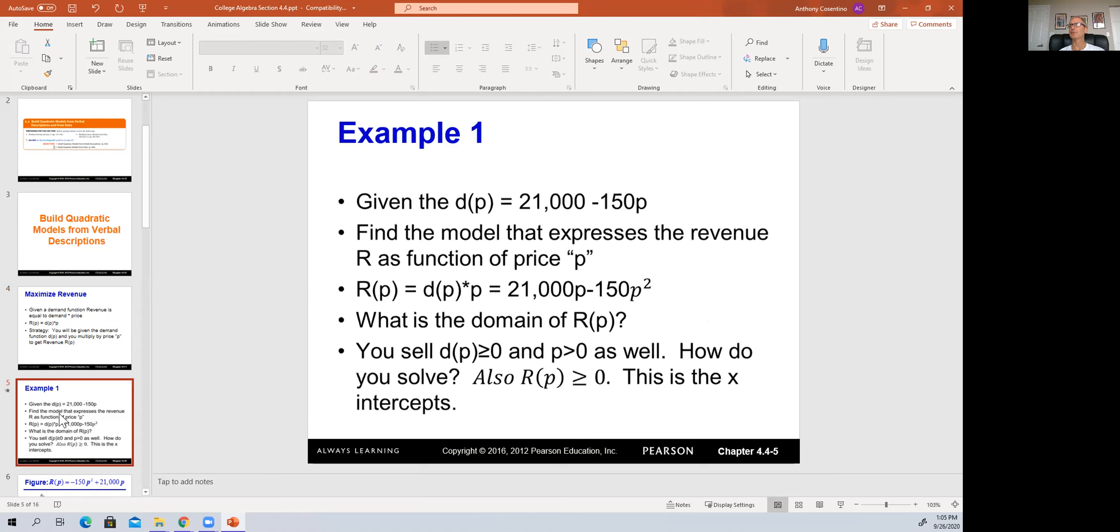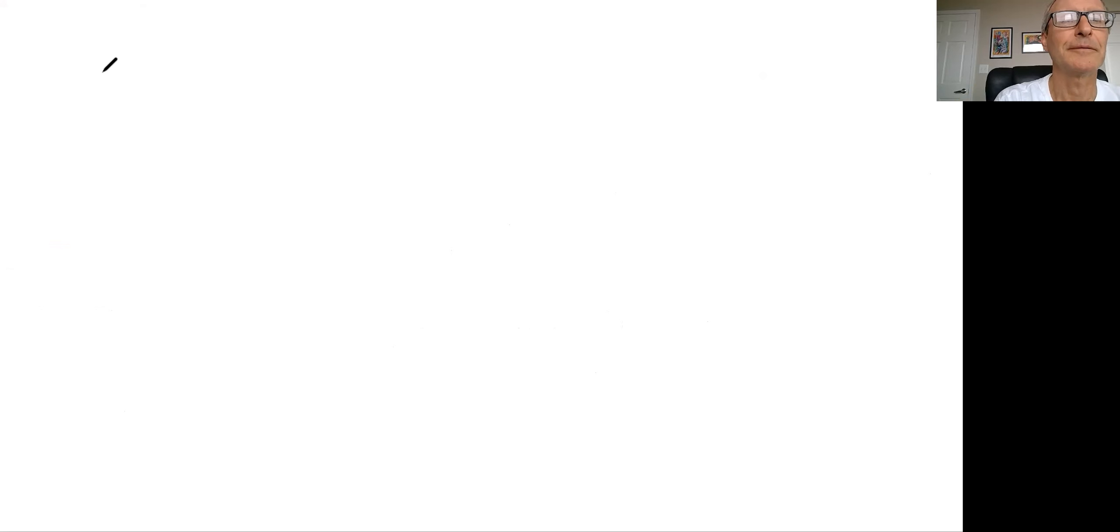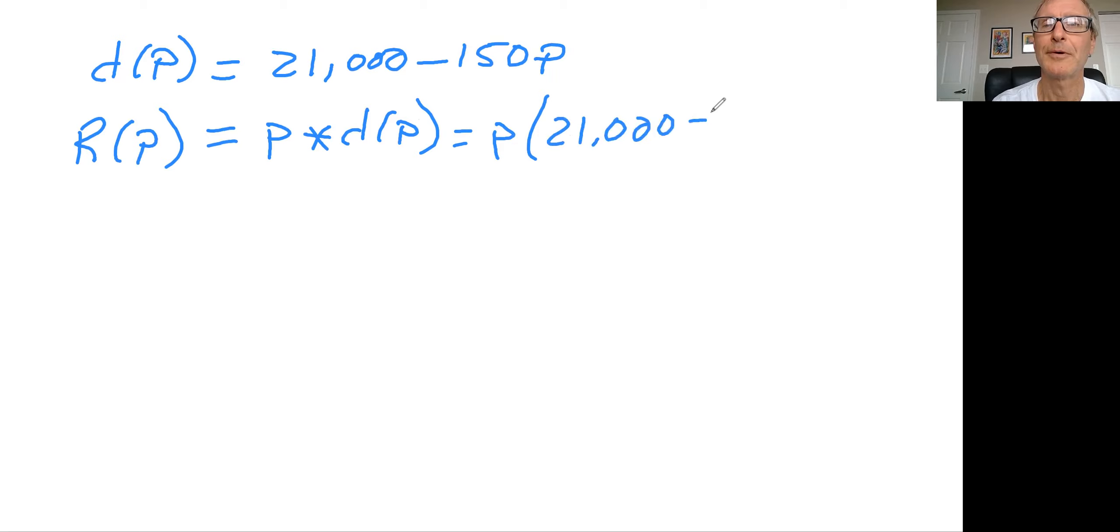And so the problem that we'll walk through is this one. It's given a model. And I believe this is a model for tickets sold at a specific sporting event. And the model for the tickets are given by 21,000 minus 150p. And so if we went to the whiteboard, it would be the equation of d(p) is 21,000 minus 150p.